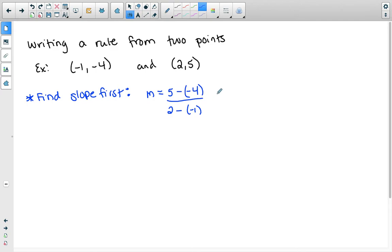5 minus a negative 4 is the same thing as saying 5 plus 4 over 2 minus a negative 1 is the same thing as saying 2 plus 1. This turns into 5 plus 4 is 9 divided by 2 plus 1 is 3. 9 divided by 3 is 3. So our slope is 3 for this case. So our final answer will have the slope of 3 in our equation.